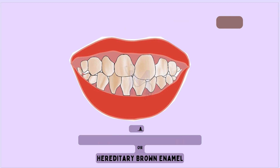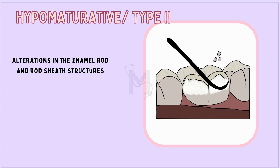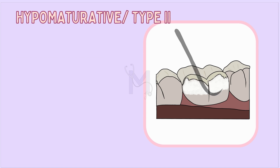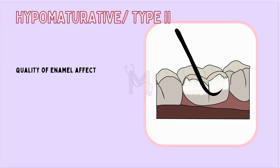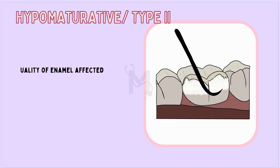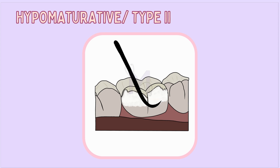Finally, in the hypomaturation type or type 2, there are alterations in the enamel rod and rod sheath structures. This affects the quality of the enamel and it can even be chipped off using dental instruments. Simple procedures like scaling can also lead to complete enamel chipping in these cases.